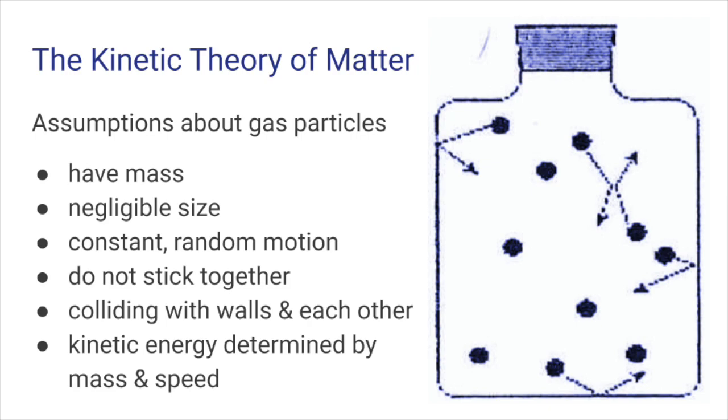The particles are assumed to have mass, but to take up basically no space at all. They never stop moving and bouncing around, and when they do bump into each other, they do not stick together. The more speed they have, or the more massive the particles, the more kinetic energy they have. As a result, gases with higher temperatures have particles moving around more rapidly.